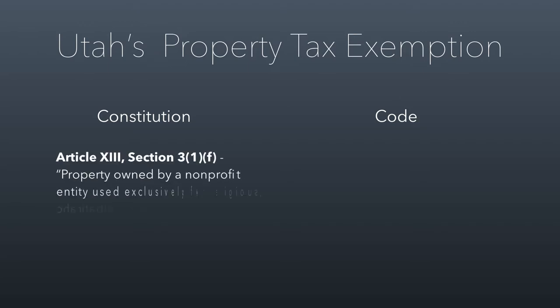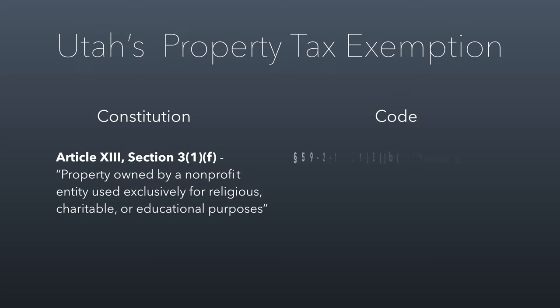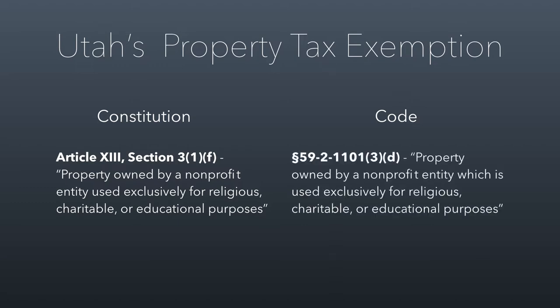If you look at Utah's law, for example, the constitution, when it lists the properties that can be excluded from property tax, it includes property owned by a nonprofit entity used exclusively for religious, charitable, or educational purposes. The legislature has enacted a property tax exemption law that says exempt property includes property owned by a nonprofit entity which is used exclusively for religious, charitable, or educational purposes. Essentially, Utah law allows for religious, charitable, and educational uses of property to be exempt from property taxes.